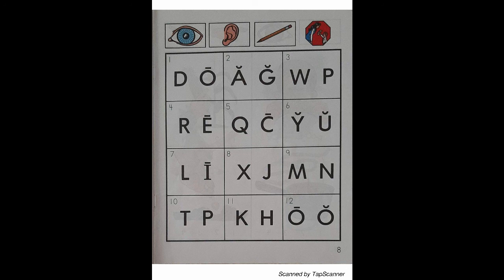Look at the letter in box 5. Listen as I say the sound of the letter. K — Cockatoo — K. With your pencil, circle the letter that reads K.